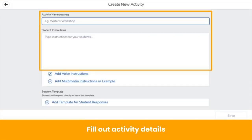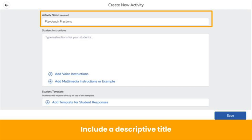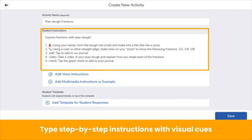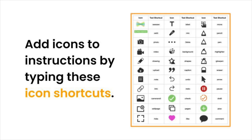Fill out your activity details. First, include a descriptive title. Then type step-by-step directions. Notice you can add emojis and Seesaw icon shortcuts — those are the words you see between the colons. When you type Seesaw icon shortcuts into your instructions, they transform into icons when you click save. Click the link in the video description to learn more about icon shortcuts.